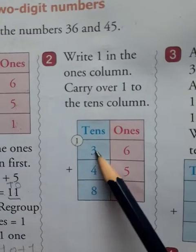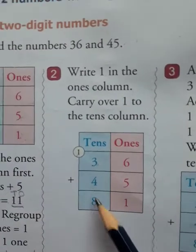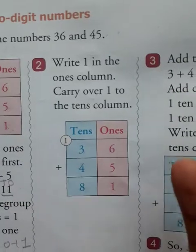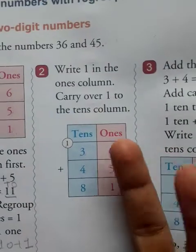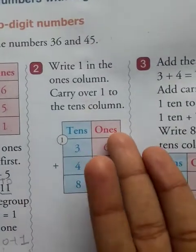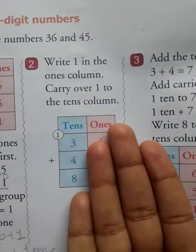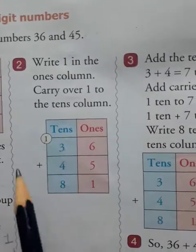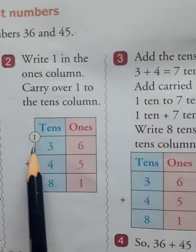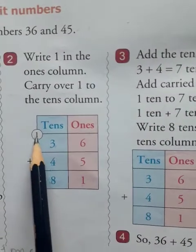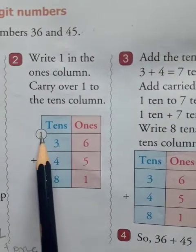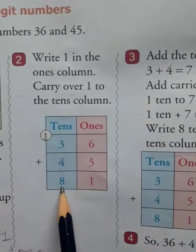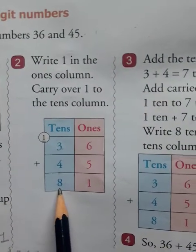Now, 3 plus 4: 3, 4, 5, 6, 7. So 3 plus 4 is equal to 7. But you also add this carry: 7 plus 1 is equal to 8.